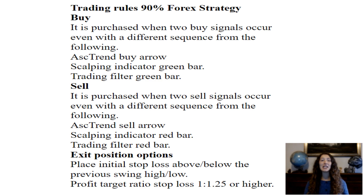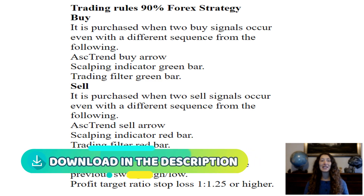Exit position options: place the initial stop loss above or below the previous swing high or low. Profit target ratio to stop loss: 1 to 1.25 or higher. Don't worry, this is a winning strategy. Examples of trades will follow.